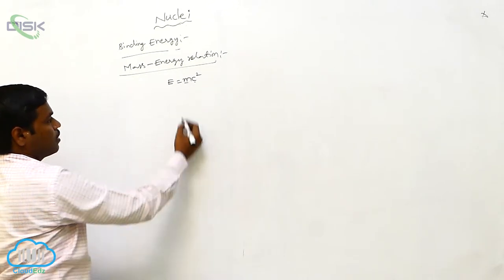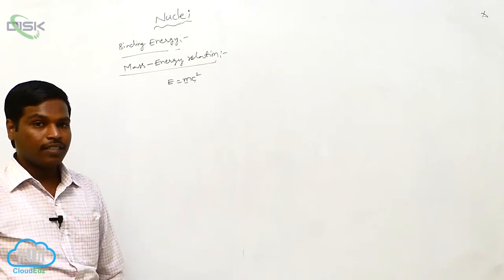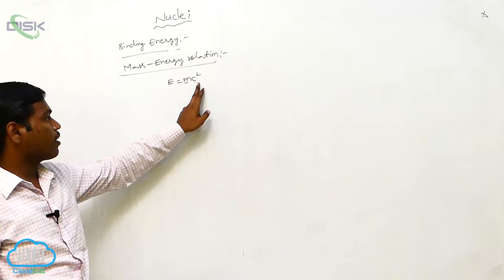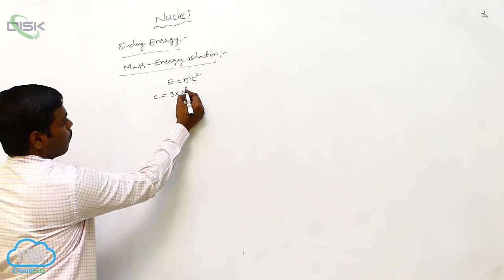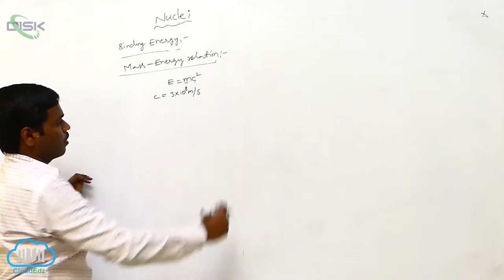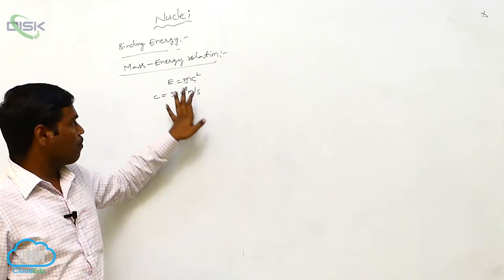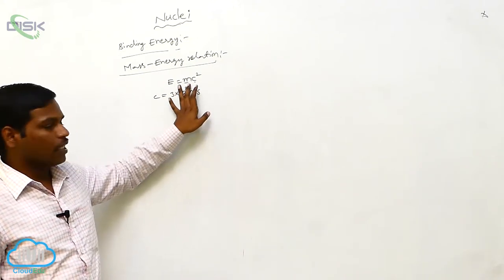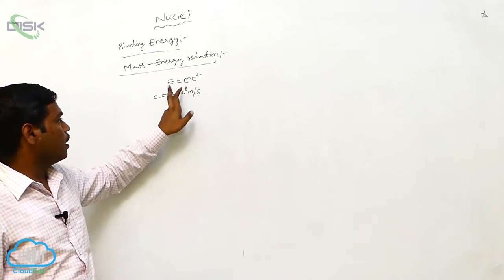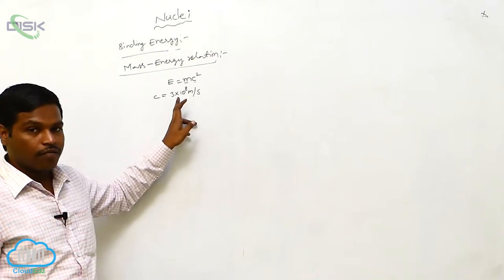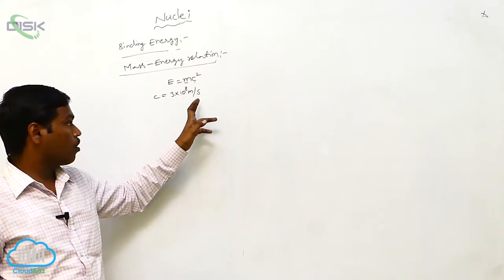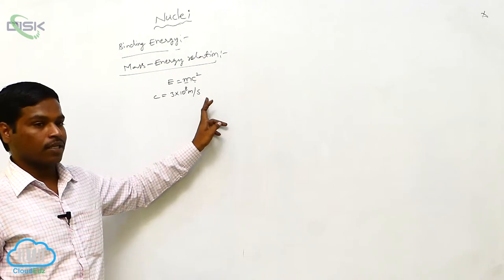m is the mass and c is the speed of light in vacuum, c equals 3 times 10 to the power of 8 meters per second. That means for every mass, there is equivalent energy, E equals mc squared, where c is the speed of light in vacuum, 3 times 10 to the power of 8 meters per second.